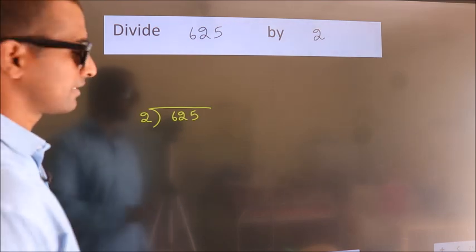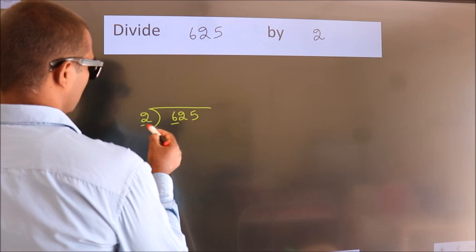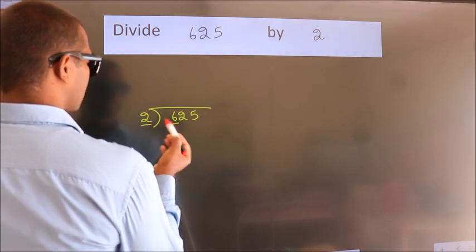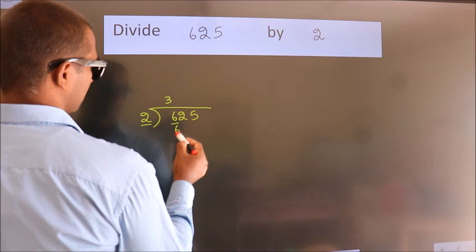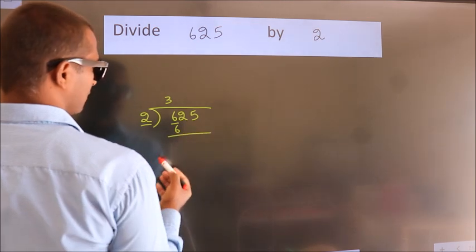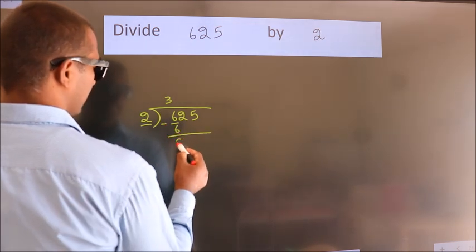Next, here we have 6, here 2. When do we get 6? In the 2 table, 2 times 3 is 6. Now we subtract and get 0.